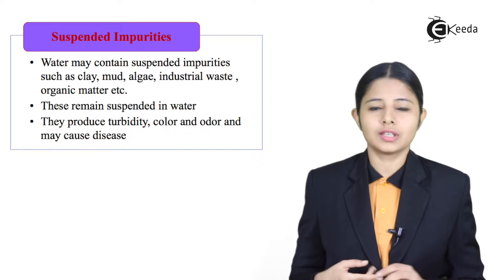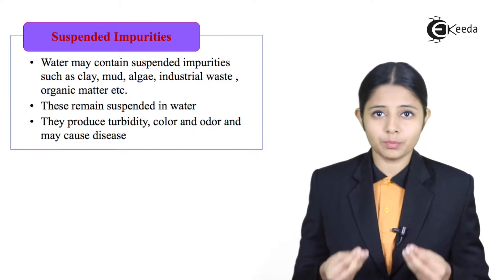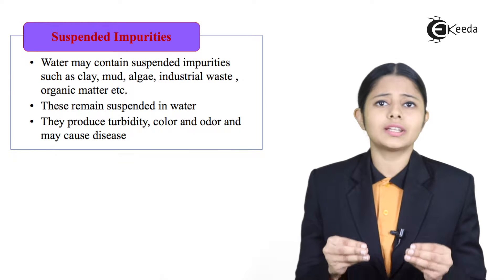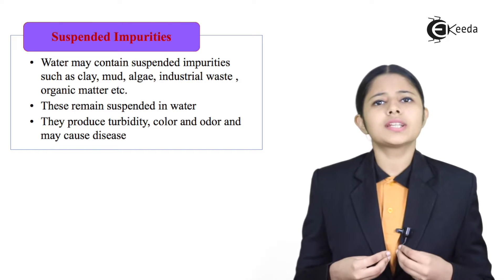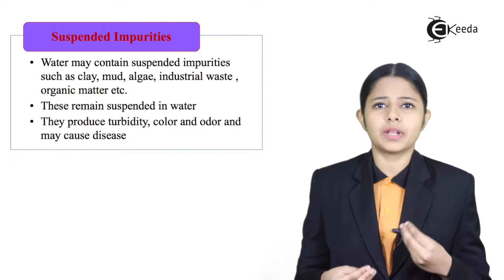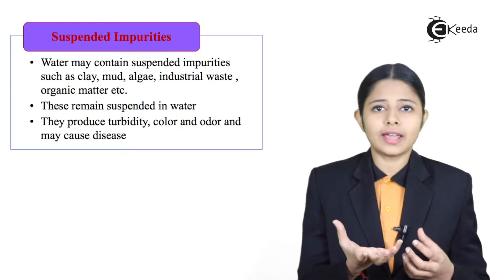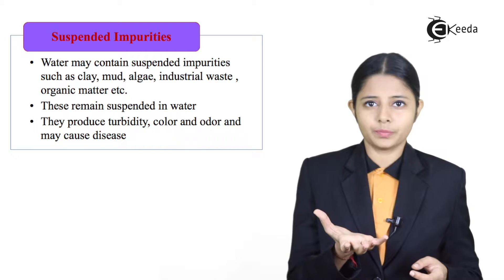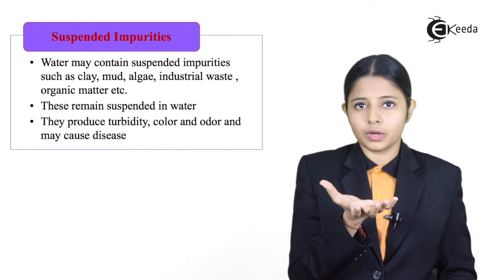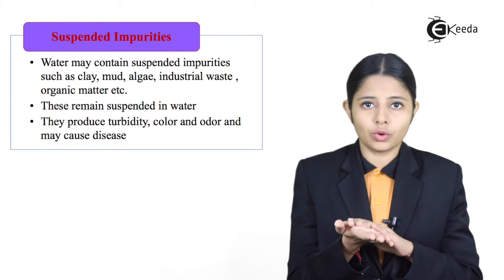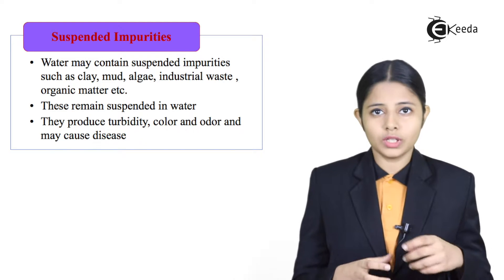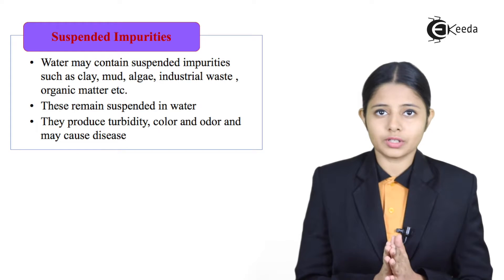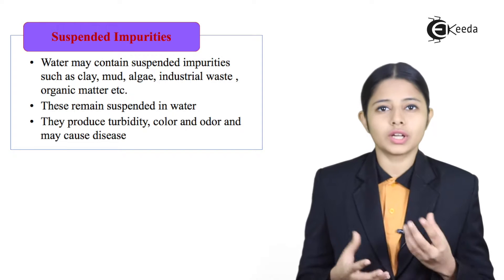Suspended impurities are those impurities which are present in water — we can see them with our naked eyes, but they are very difficult to remove. For example, all the mud, clay, and algae present in water. Imagine a tank full of muddy water. If we put the muddy water through a filter paper, the mud is mixed with the water and will flow through the filter paper, so these impurities are very difficult to remove.